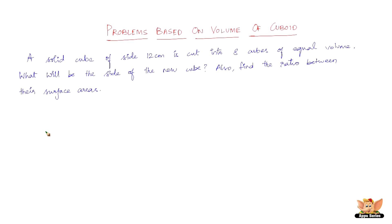Let us solve more problems based on volume of cuboid. The question reads like this: a solid cube of side 12 cm is cut into 8 cubes of equal volume. What will be the side of the new cube? Also find the ratio between their surface areas.